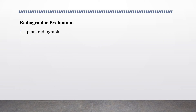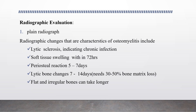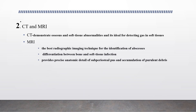Radiographic evaluation begins with plain radiograph. Changes characteristic of osteomyelitis include lytic sclerosis indicating chronic infection. Within 72 hours, soft tissue swelling appears. After 5–7 days, periosteal reaction is seen. Lytic bone changes require 7–14 days and need 30–50% loss of bone matrix before they appear. Changes in flat and irregular bones take longer to appear.